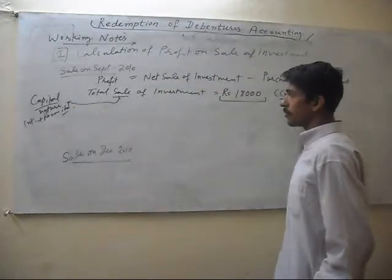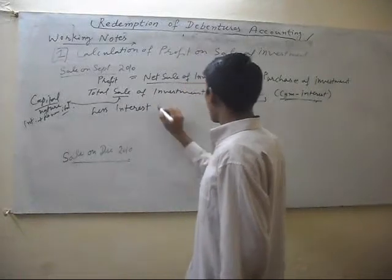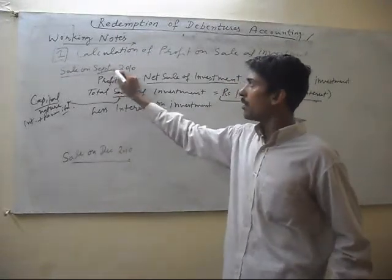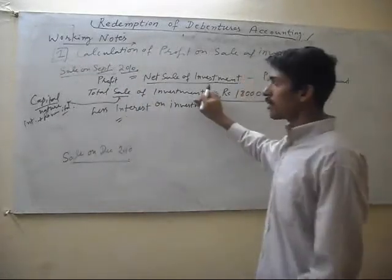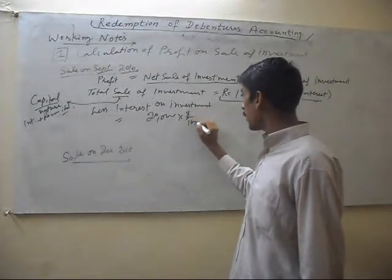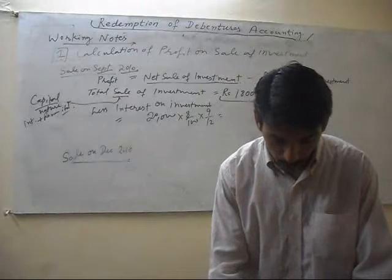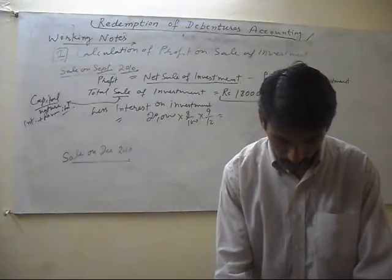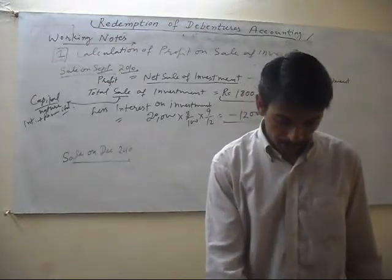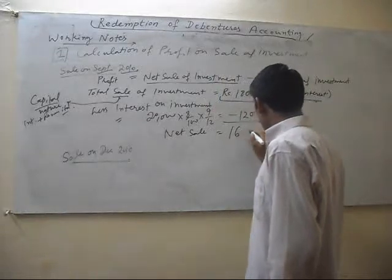So we deduct the interest for calculating the net sale of investment. Less interest on investment: the nominal value of the same investment is 20,000. The rate of interest on investment is 8% for 9 months. Its value is 20,000 at 8% into 9 divided by 12. After deducting this, we calculate the net sale amount of 16,800.